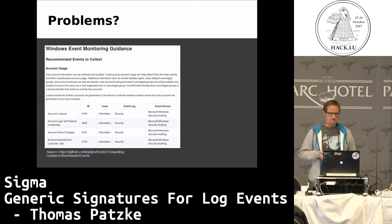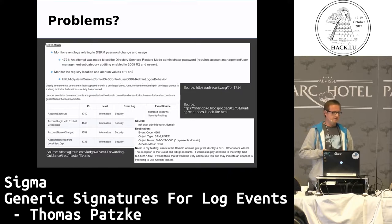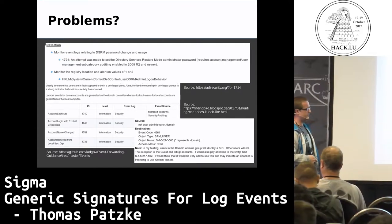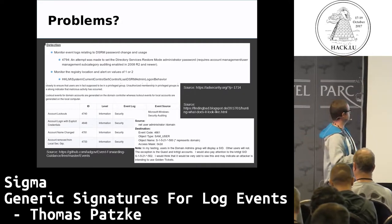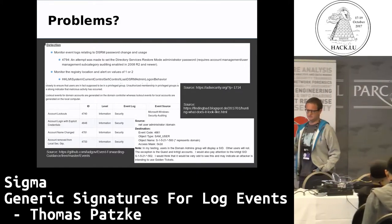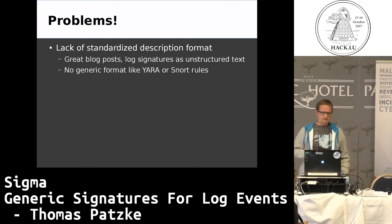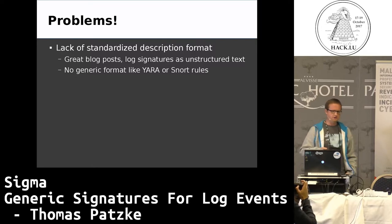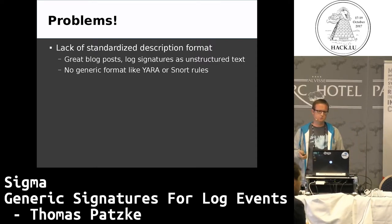The main issue is there are many good resources and blog articles where indicators appear, but the problem is you see, for example, an event code 4661 in a format that one blog author posted, and here it's in a different format. There's no generic format where you can do a conversion step and have it land directly into your SIEM system - there was no generic format to describe log events, like Yara for files or Snort rules for network.